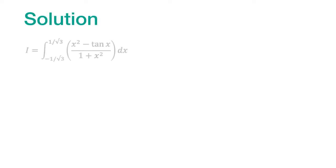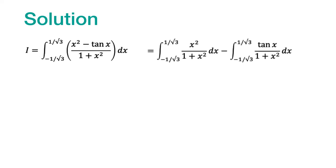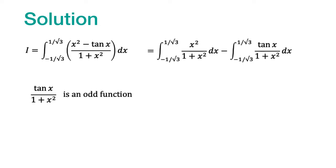First of all, let us write down the given integral. The first step would be to split this into two parts. We observe the second integral and find that the function we have to integrate is tan x divided by 1 plus x squared, which is an odd function.